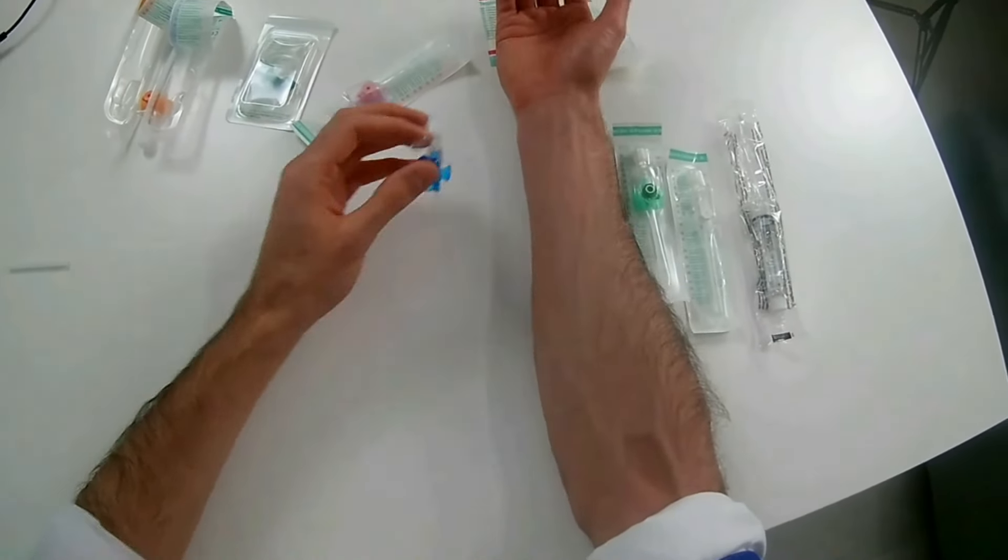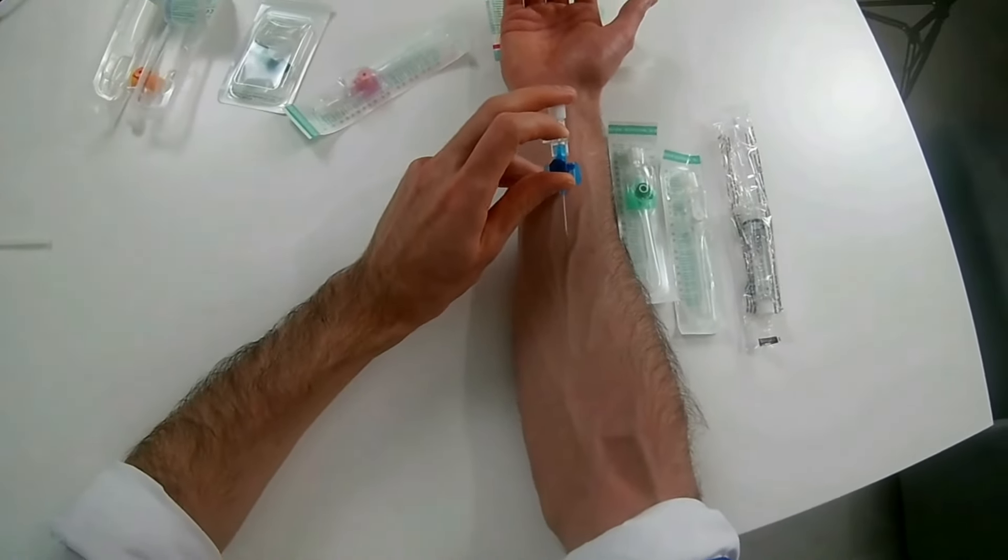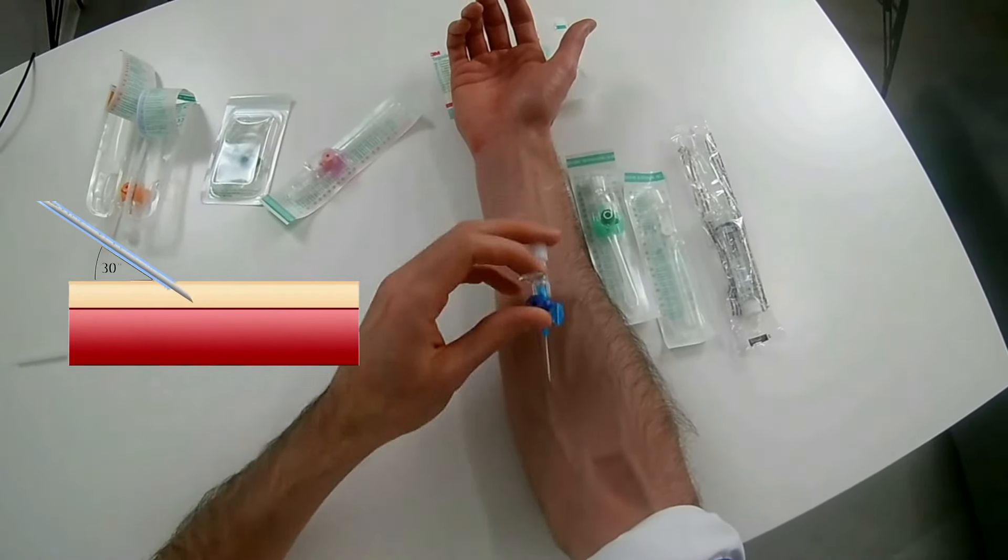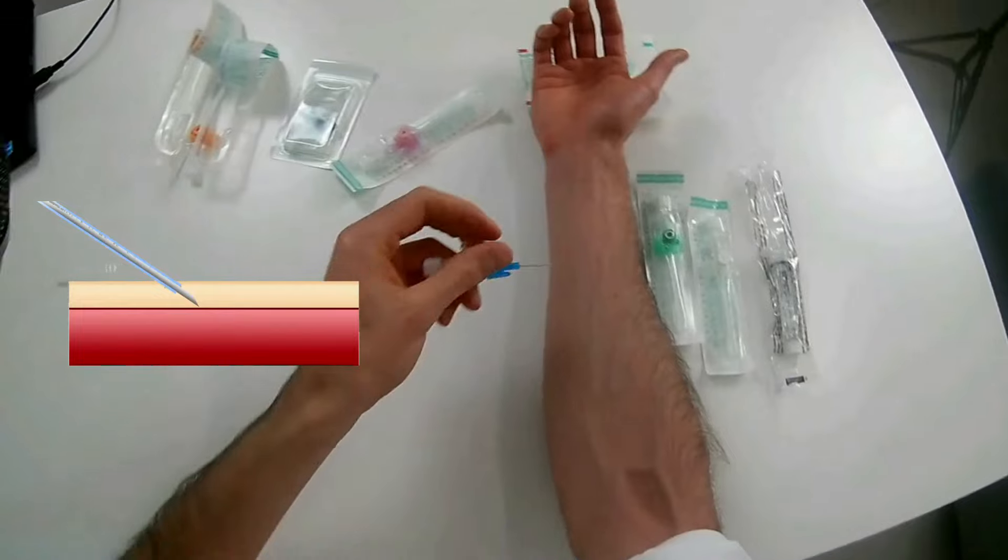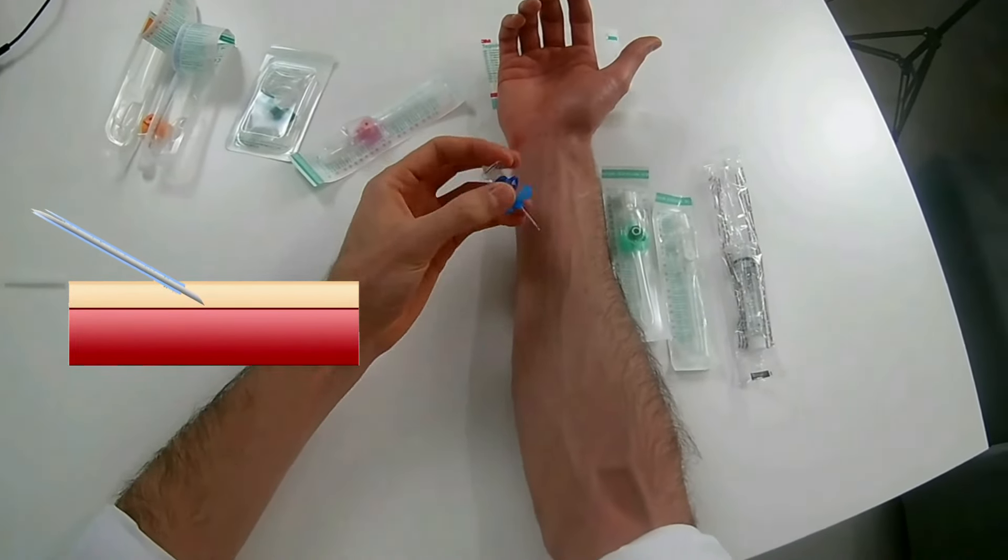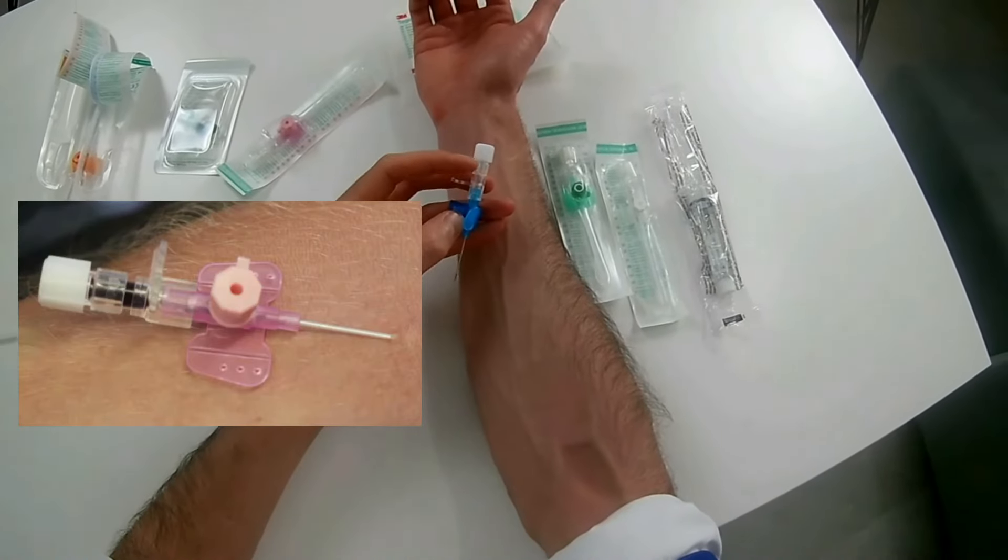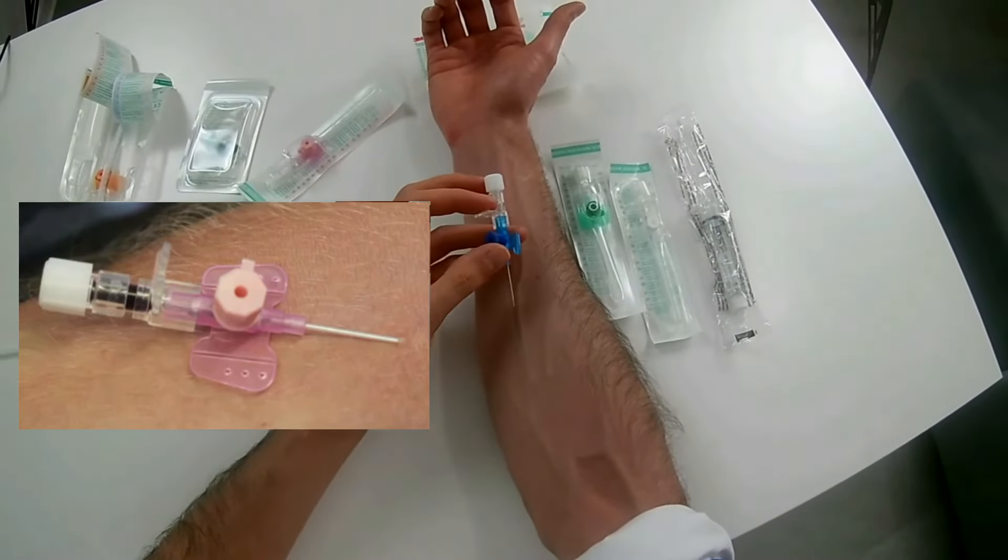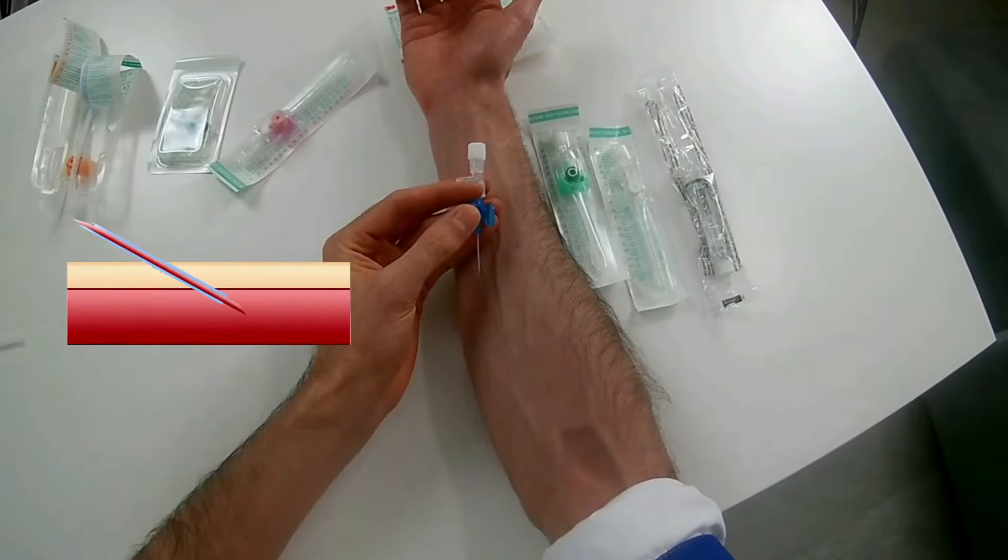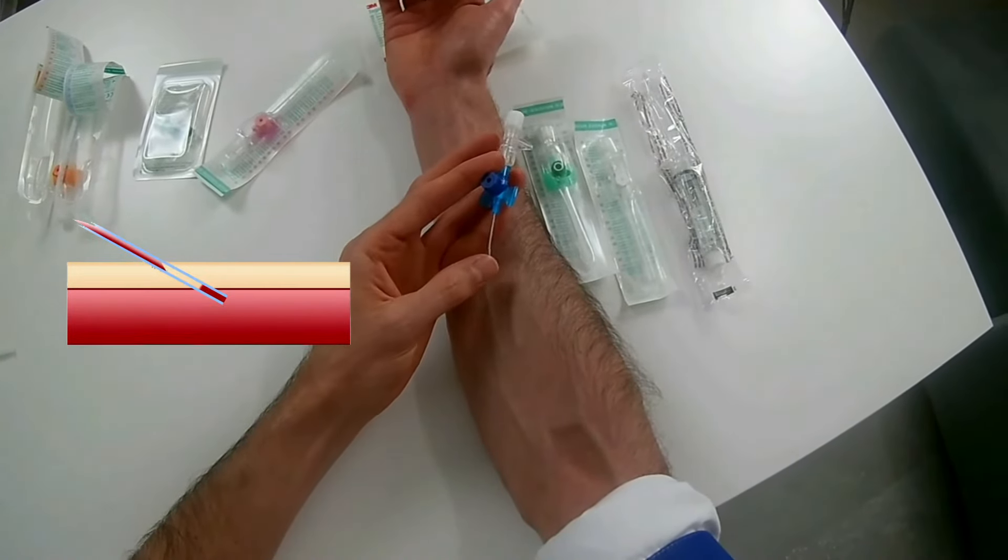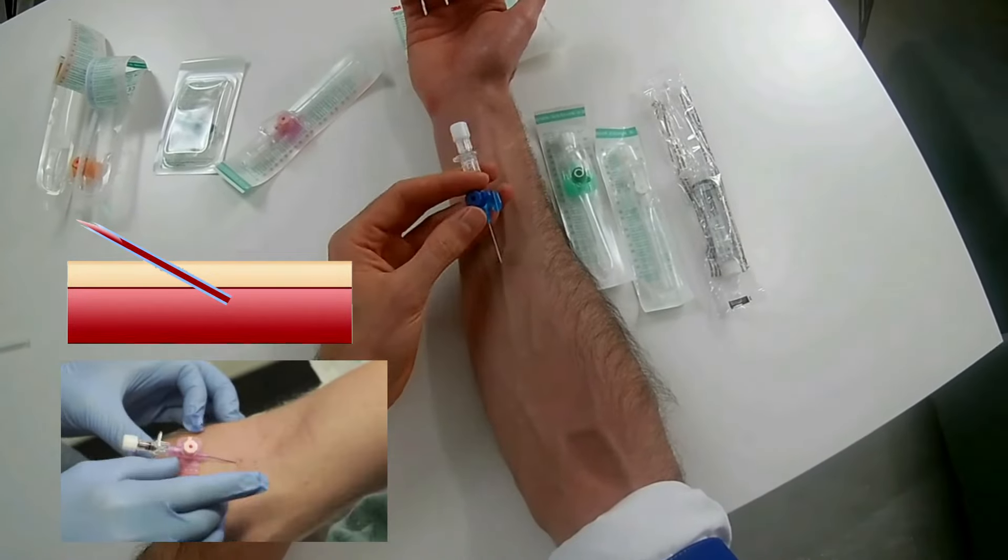Once you have found it, you want to go in approximately 30 degrees in the direction of the blood flow, never against it. When you meet blood, you will see some blood coming in this camera in the back.